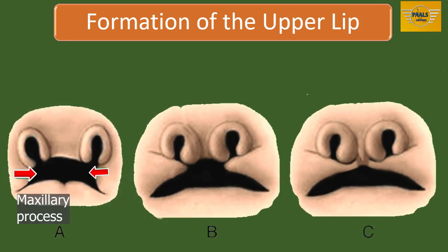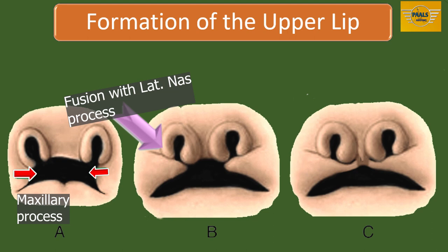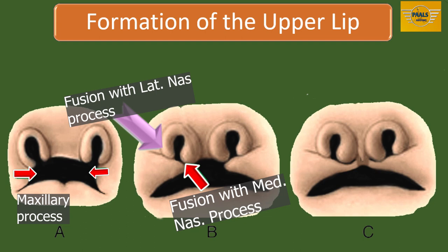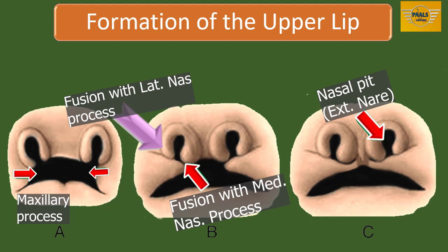We will proceed to the formation of the upper lip. Each maxillary process will grow medially — first fusing with the lateral nasal process, then with the medial nasal process. Also, the medial and lateral nasal processes will fuse with each other. With this fusion, the nasal pits, now called external nares, which were initially communicating with the stomatodeum, will be cut off and separated from it. The maxillary processes also undergo considerable growth, while the frontonasal processes become narrower, bringing the two external nares together.